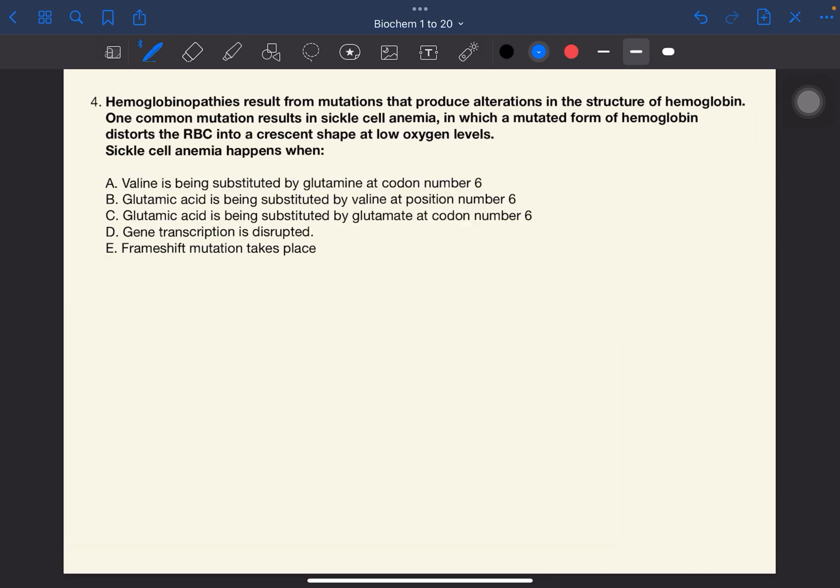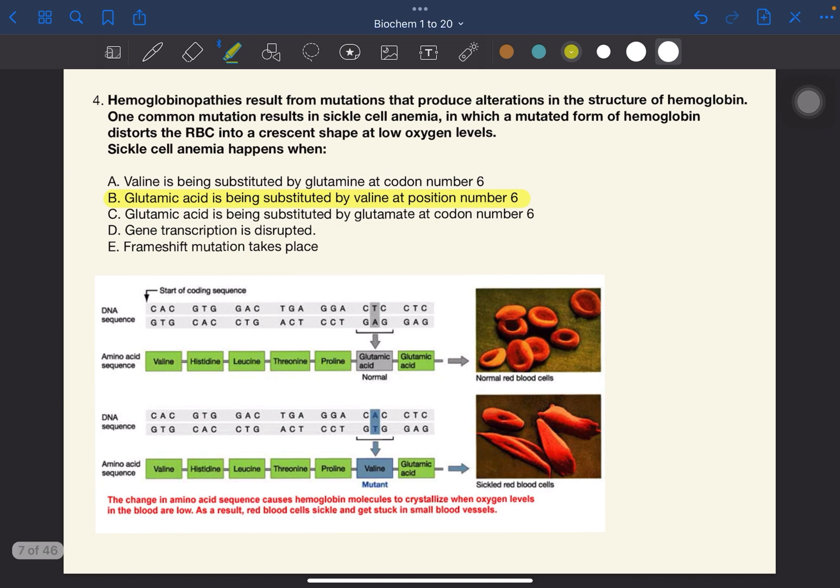Number four. Hemoglobinopathies result from mutations that produce alterations in the structure of hemoglobin. One common mutation results in sickle cell anemia, in which a mutated form of hemoglobin distorts the RBC into a crescent shape at low oxygen levels. Sickle cell anemia happens when the answer to this one is B. It happens when glutamic acid is being substituted by valine at position number six.